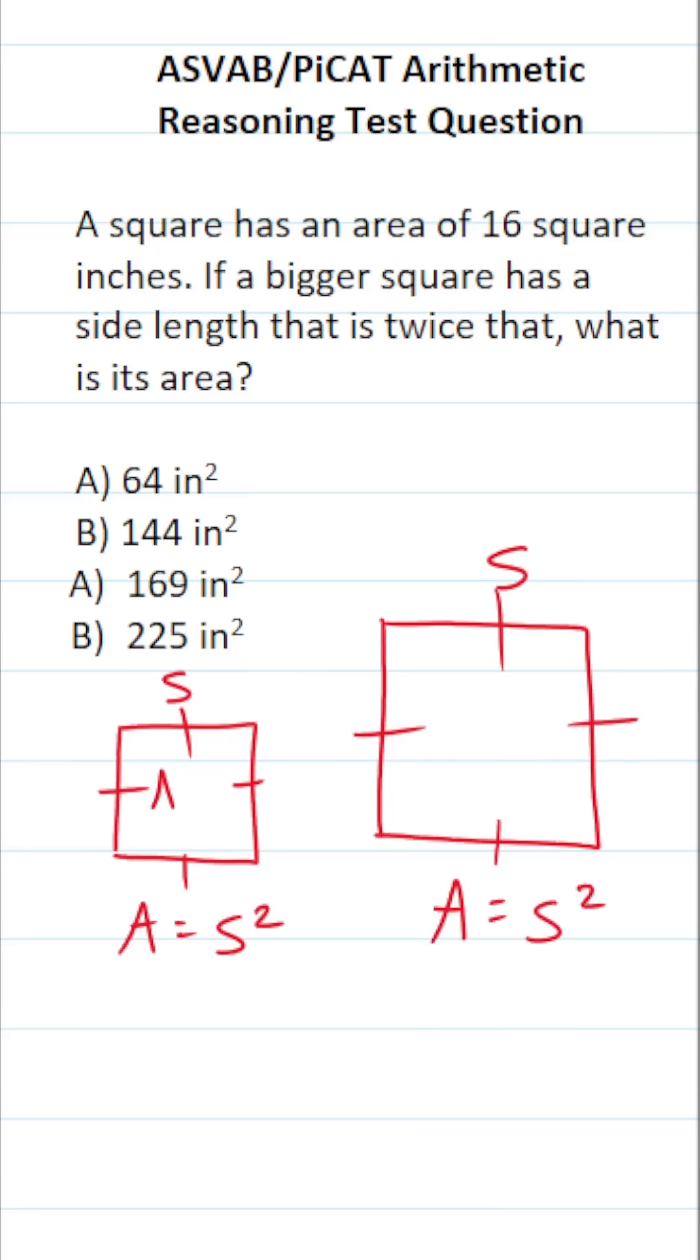Now, according to the problem, this smaller square has an area of 16 square inches. And we can solve for its side length by plugging in 16 for A. This becomes 16 equals s squared. To get s by itself or its side length,